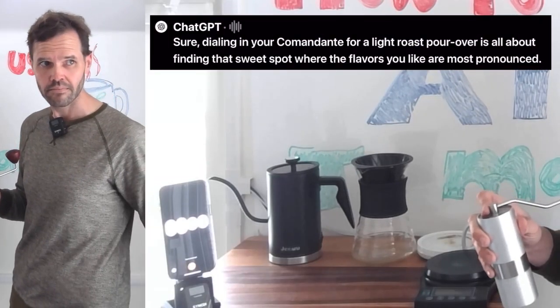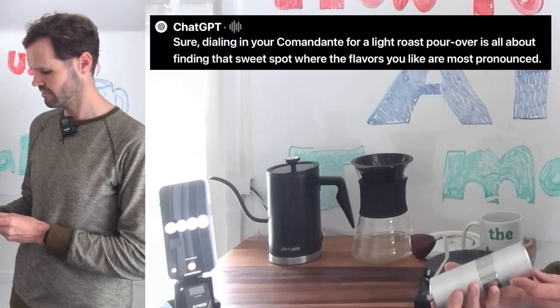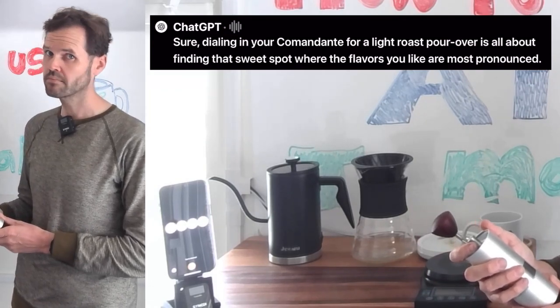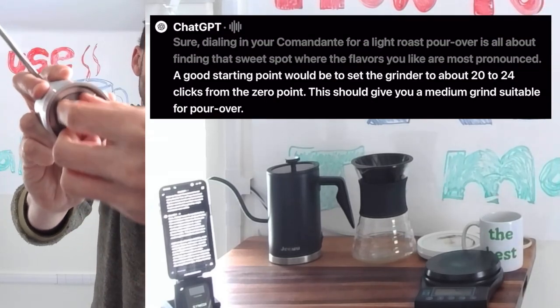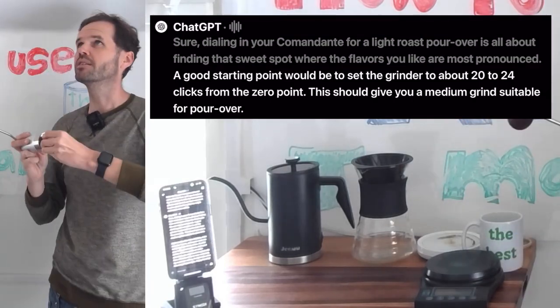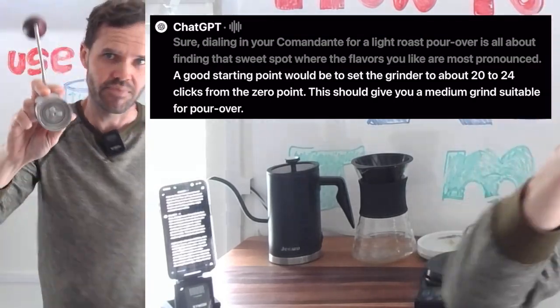Dialing in your Comandante for a light roast pour-over is all about finding that sweet spot where the flavors you like are most pronounced. A good starting point would be to set the grinder to about 20 to 24 clicks from the zero point. This should give you a medium grind suitable for pour-over.